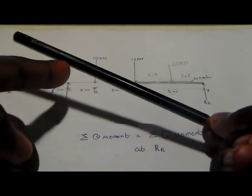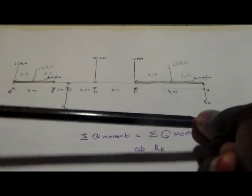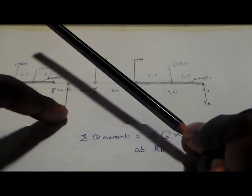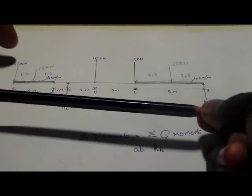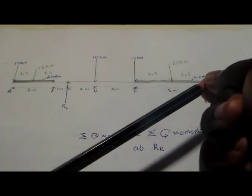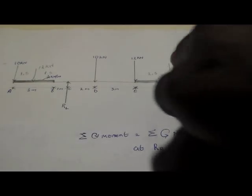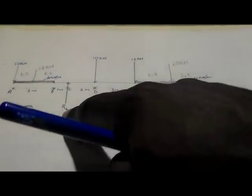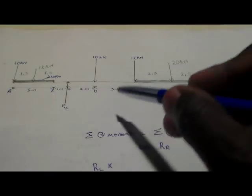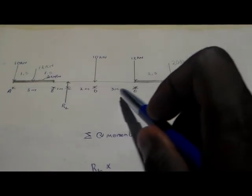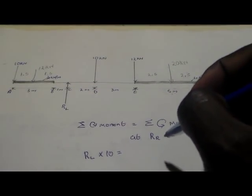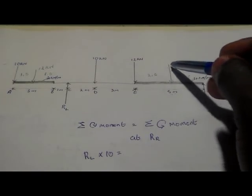With the pivot at RR, the left reaction RL pushes the beam upward, turning it clockwise. All the point loads push the beam downward, turning it anti-clockwise. So clockwise is RL multiplied by the whole distance from RL to RR, which is 5 plus 3 plus 2 = 10 meters.